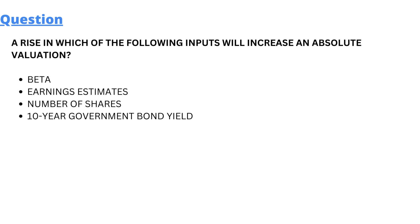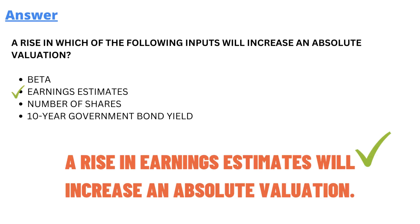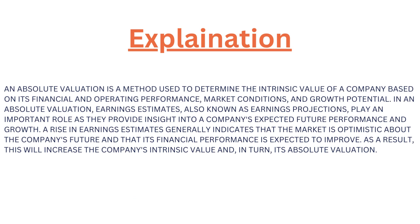The correct answer is earnings estimates. It's very obvious that if the earnings of a company grow, its valuation will automatically grow. So a rise in the earnings estimate will increase an absolute valuation. Absolute valuation is a method to determine the intrinsic value of a company based on its financial and operating performance, market conditions, and growth potential.